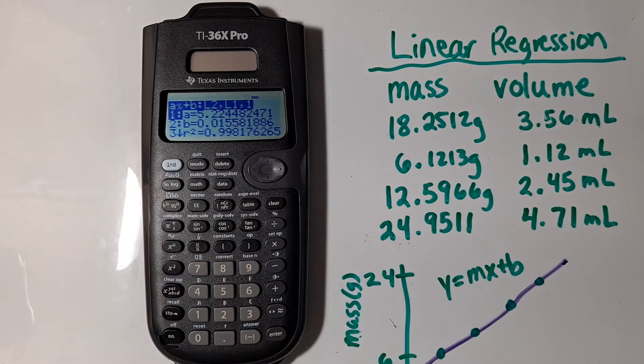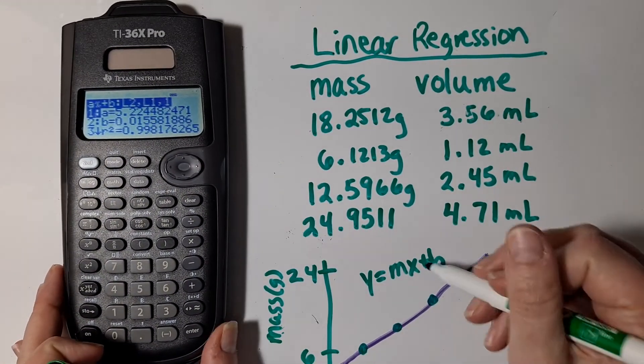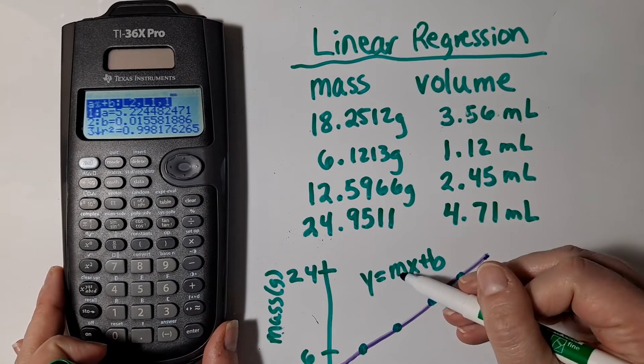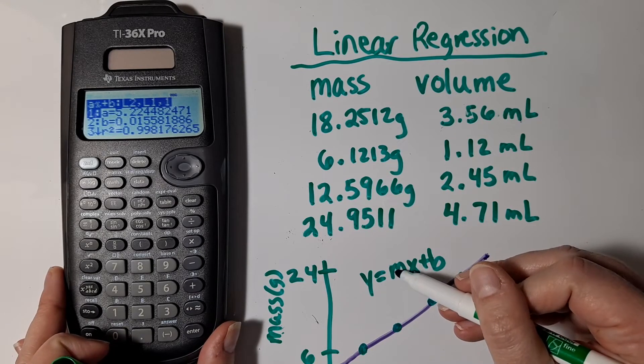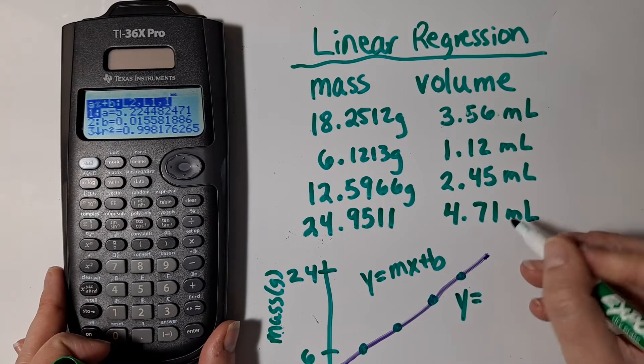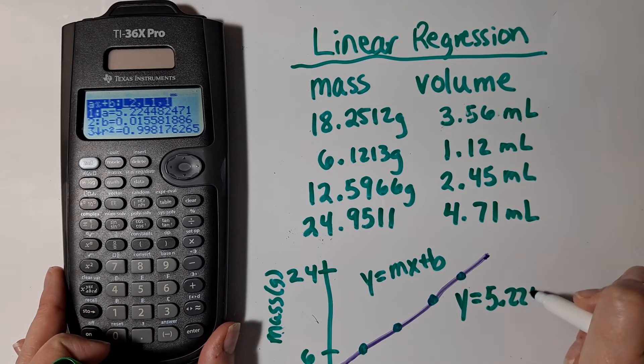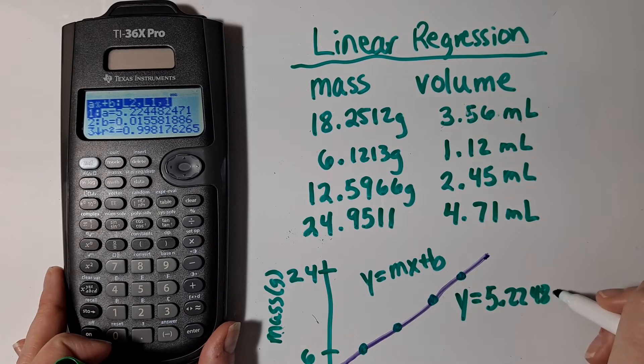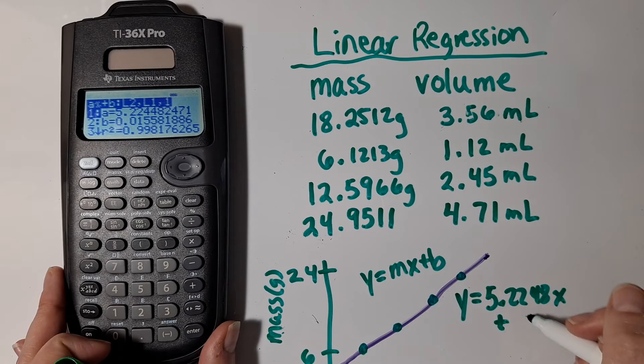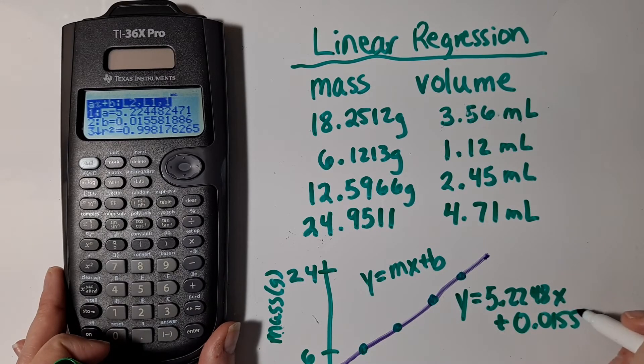And now it tells me my equation. So it said that A was the slope because that was multiplied by the X. And so my equation for the trend line is Y is equal to 5.2248X plus 0.01558.